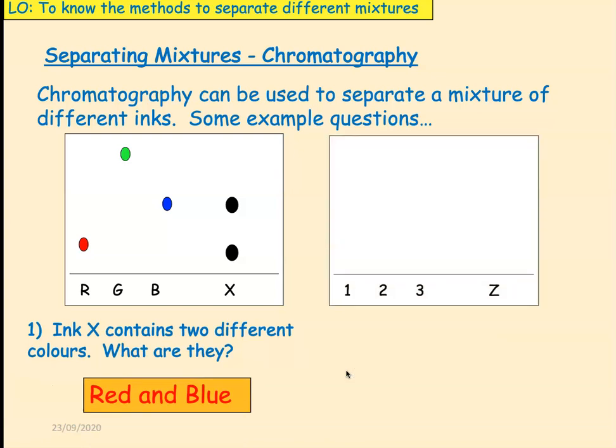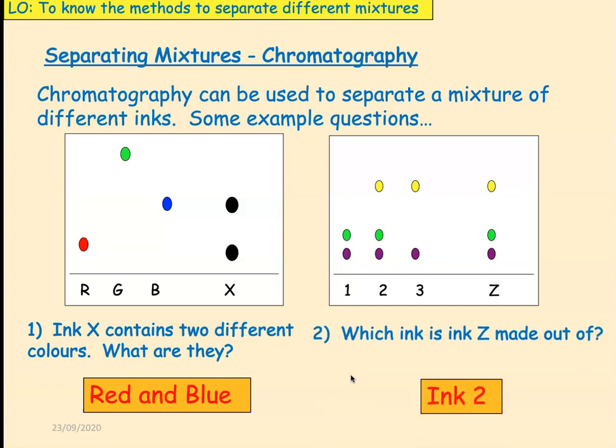Okay, here's another one. Let's see if you can do this one all by yourself. Right, we've got three different inks giving three different patterns. This is Z. I want you to tell me, while I pause the video, which ink completely matches with Z. That's right, it's ink 2.